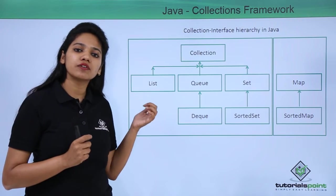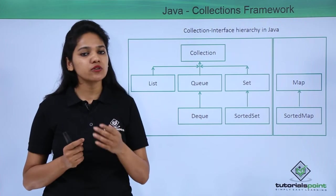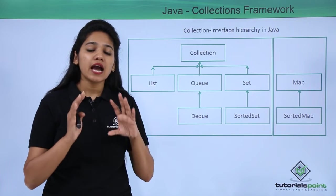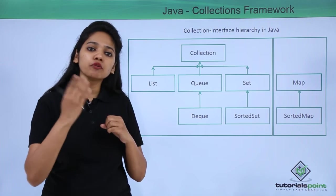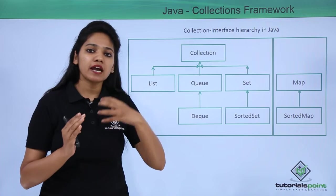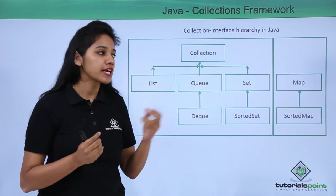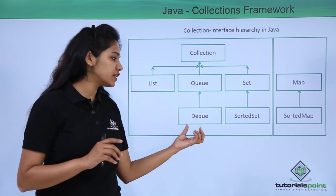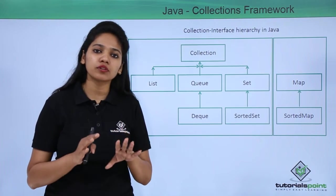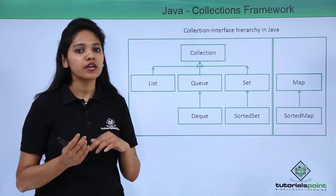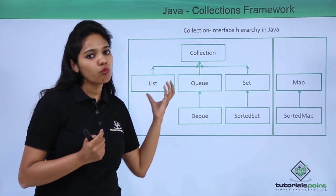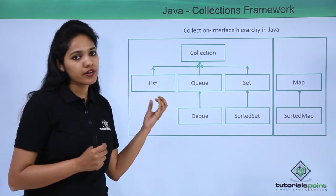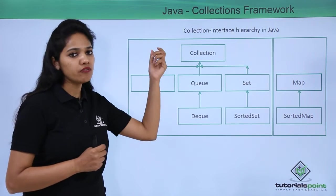The implementations of List are ArrayList and LinkedList. Next is Queue. Queue stores elements before processing — it holds elements before processing and allows a FIFO method, that is First In First Out. Whereas Deque says that it will support both Last In First Out and First In First Out. So we need to understand the order, unordered behavior, and duplicacy of elements in the case of these collection interfaces.